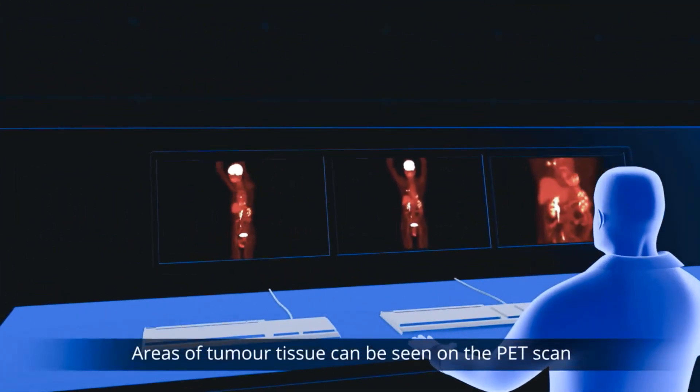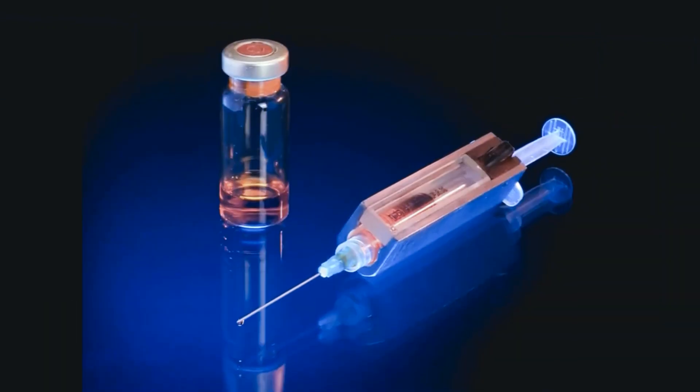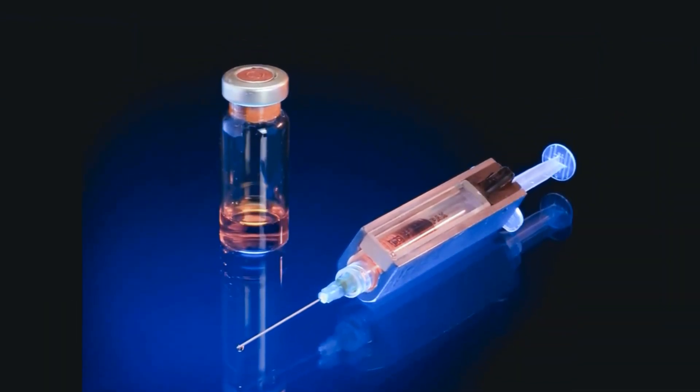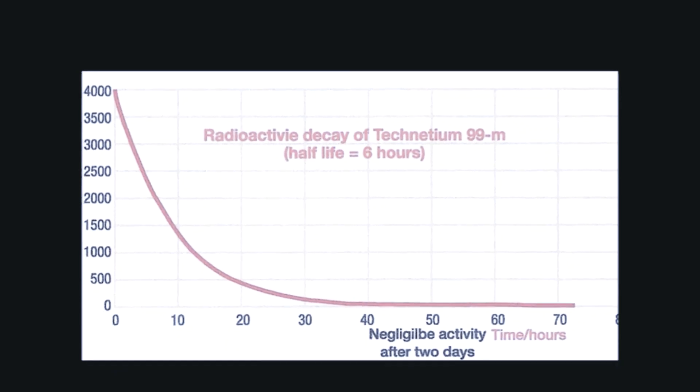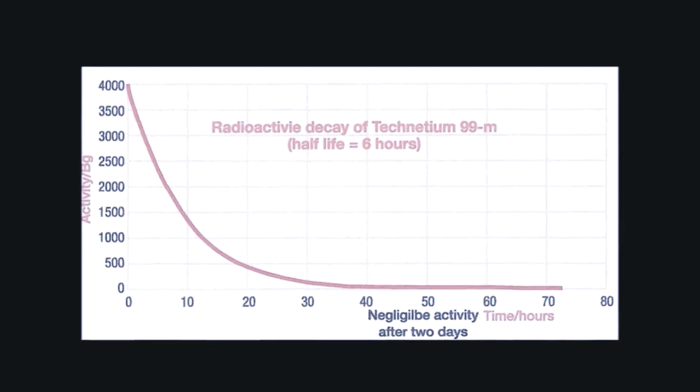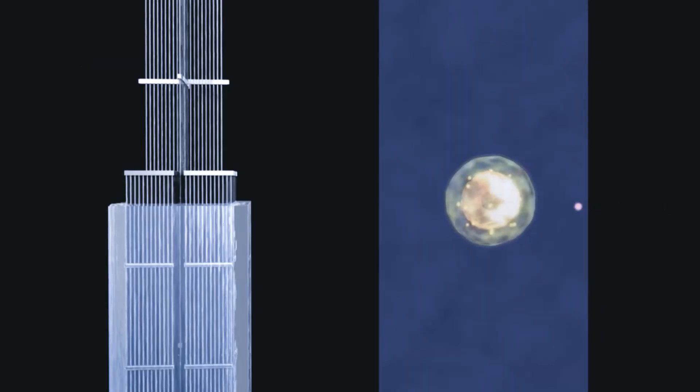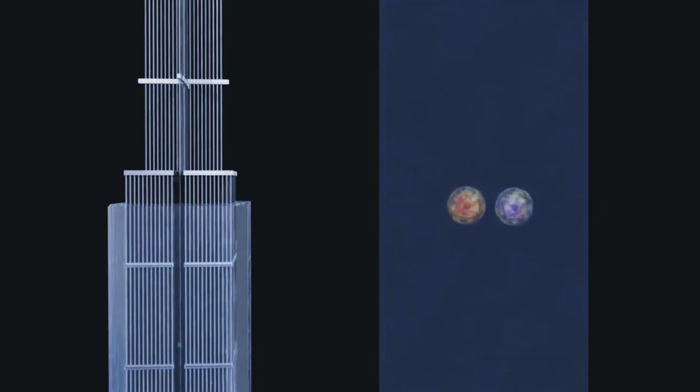These are detected by a PET camera and give very precise indications of their origin. The most common radioisotope used in diagnosis is technetium-99, with some 40 million procedures per year, accounting for about 80% of all nuclear medicine procedures worldwide.